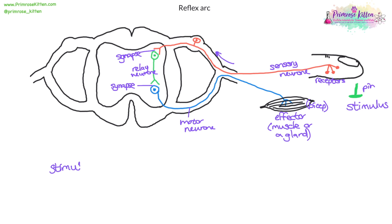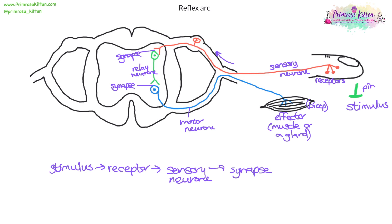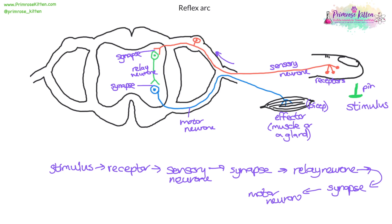So: stimulus, receptor, sensory neuron. The synapse goes to relay neuron. It goes to another synapse, which passes the message on to the motor neuron, which passes the message on to your effector, which is a muscle or gland. It doesn't matter if you go over two lines with your flow diagram — as long as you have your arrows pointing in the correct direction, you'll be okay.